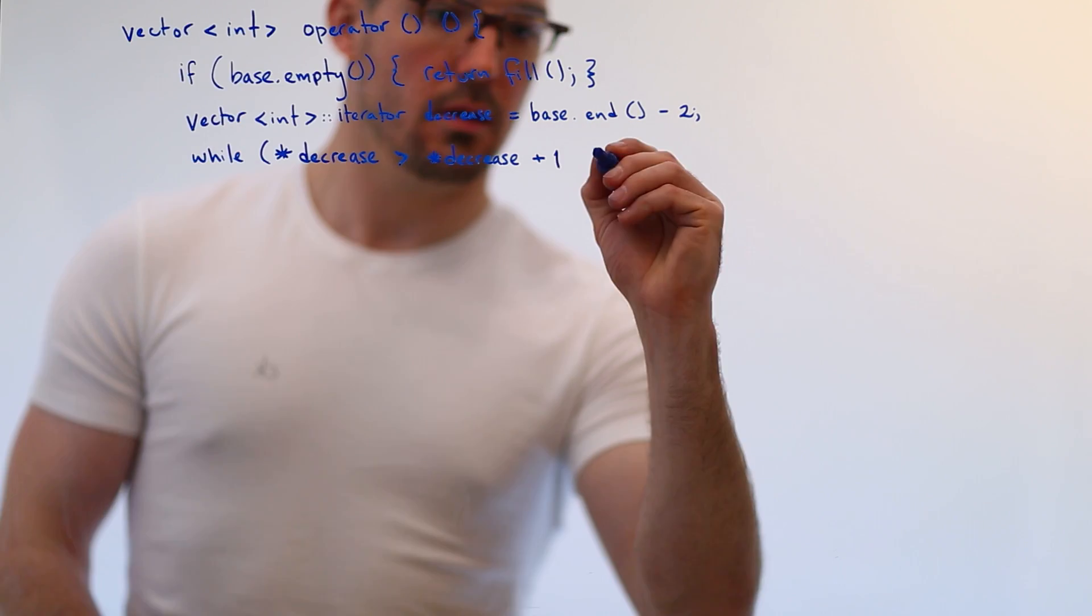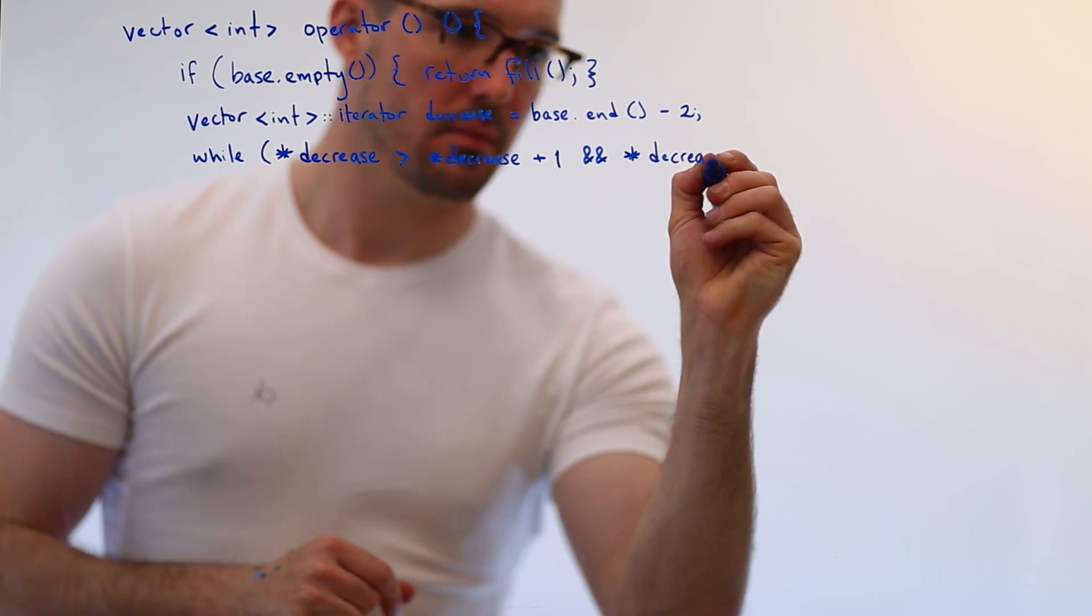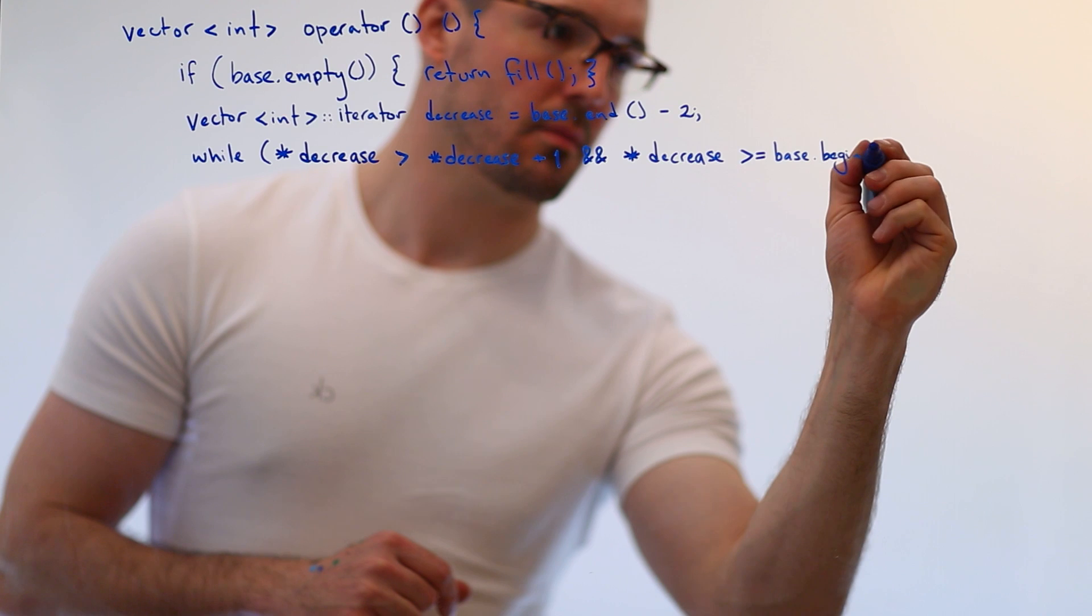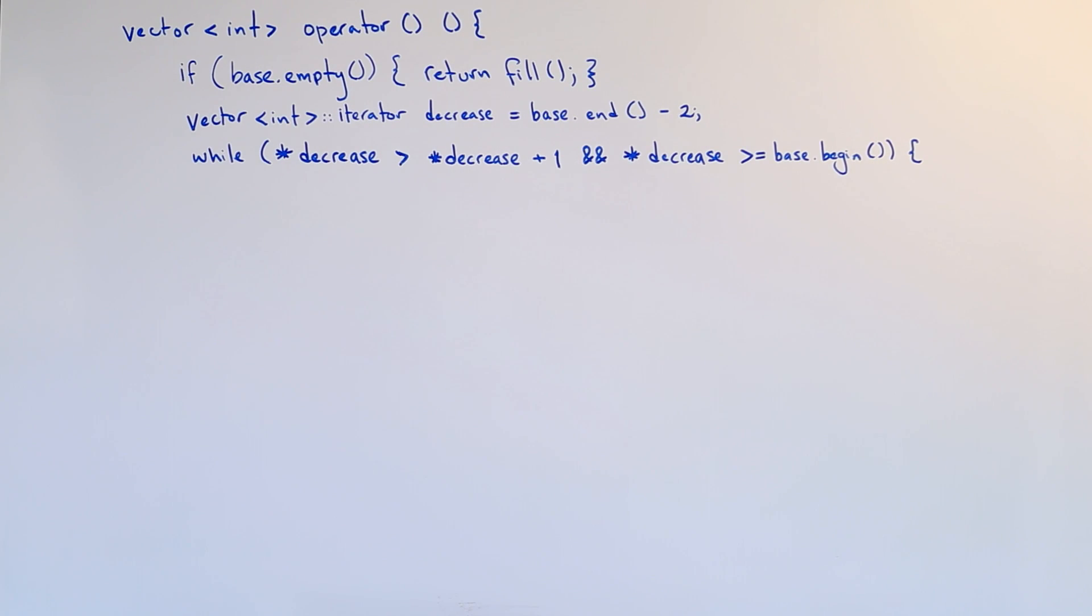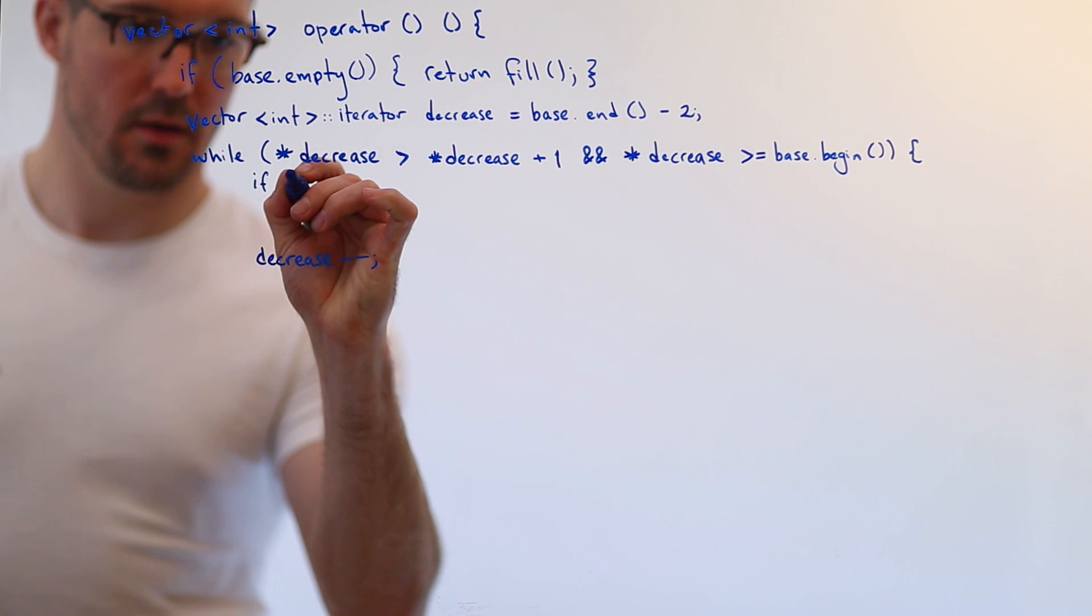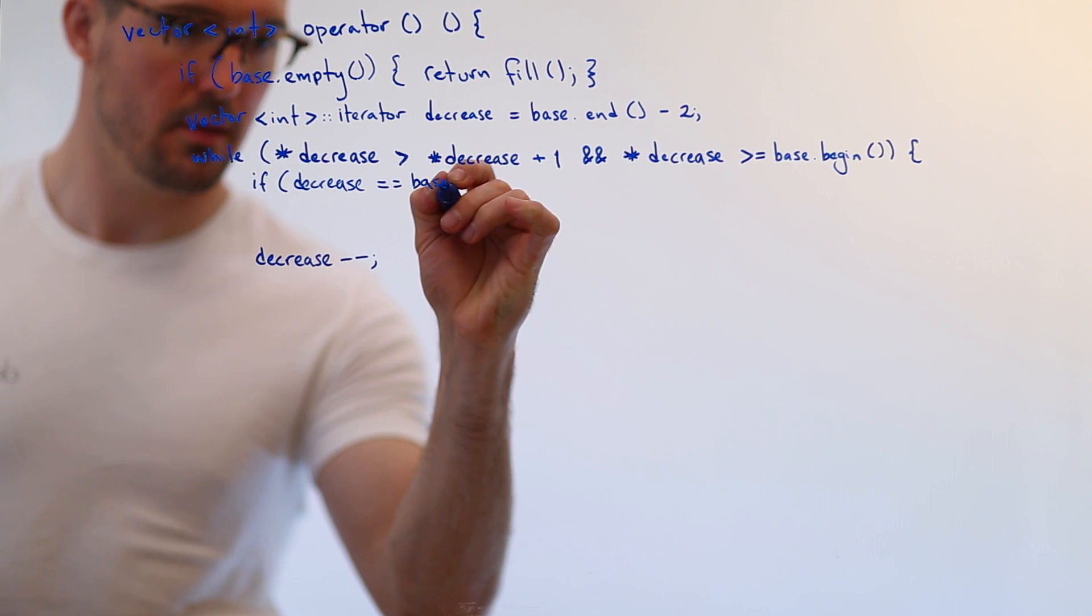But we do want to go all the way to the very beginning. Because if we're at the first number, and we haven't decreased yet, then that means that the biggest number is in the first position. And we're done, we can't possibly create another permutation. So we do need to say, while decrease is greater than or equal to the very first position in the vector. So what we have to do in the loop is decrement our decrease iterator. But there's a special case here. And that special case is if we are right at the beginning of the vector, if we're there, we're done, we cannot possibly create another permutation.